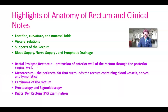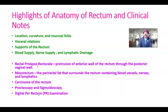Proctoscopy is an instrument used to assess the anal canal and rectum. Sigmoidoscopy is an instrument to visualize the rectum and sigmoid colon. Digital per-rectal examination is very important, especially to diagnose conditions like prostatic hypertrophy, prostatic carcinoma, and also to assess the strength of the perineal body and anorectal ring — no ER or surgical examination is complete without it.